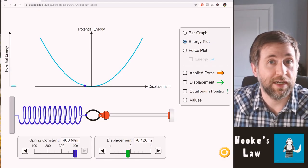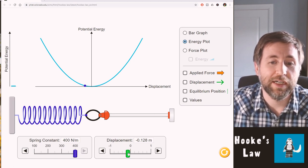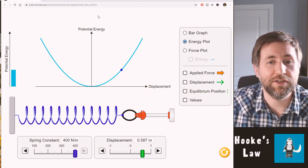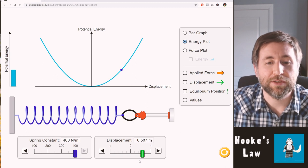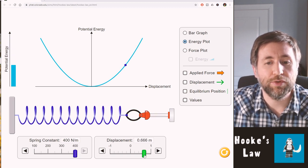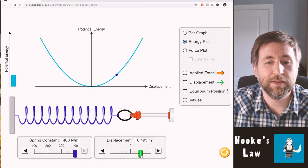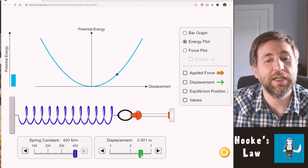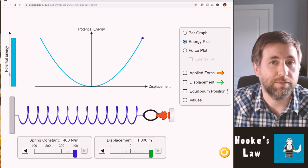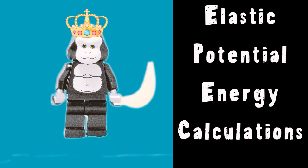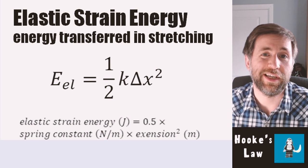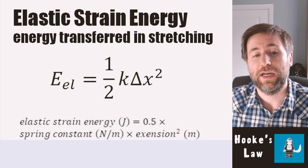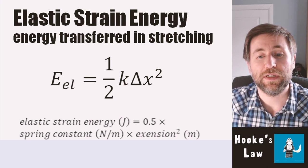The stored energy in a spring varies with extension squared. So as you see on the graph of displacement versus energy, it's an x squared relationship — double the extension, you quadruple the energy stored. It is really crucial that you measure things in SI units in physics. In this case, we want elastic strain energy in joules, and we therefore need the spring constant in newtons per metre and the extension in metres.